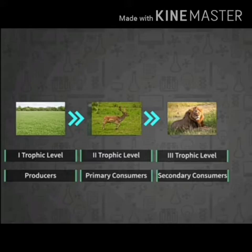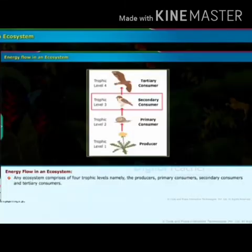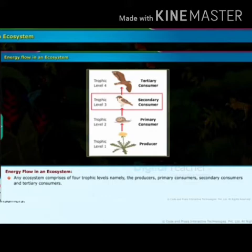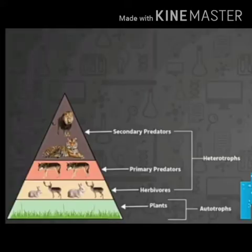Herbivores constitute the second trophic level. Carnivores constitute the third trophic level. And large carnivores or top carnivores, which feed upon small carnivores, constitute the fourth trophic level. So we can say that any ecosystem comprises four trophic levels — namely the producers, primary consumers, secondary consumers and tertiary consumers.